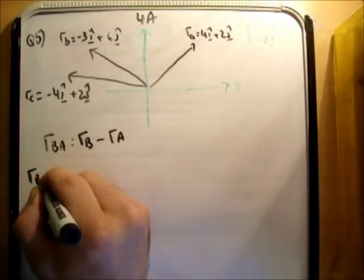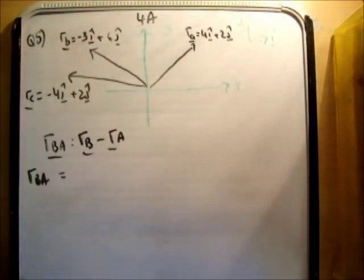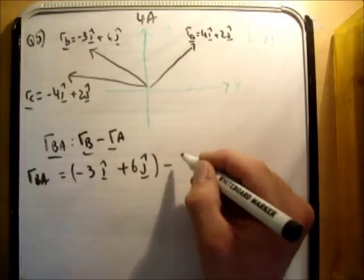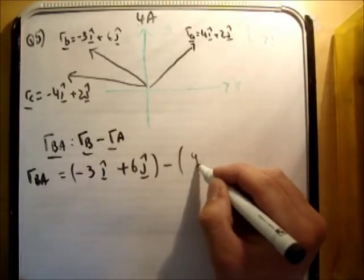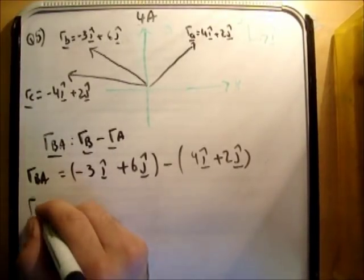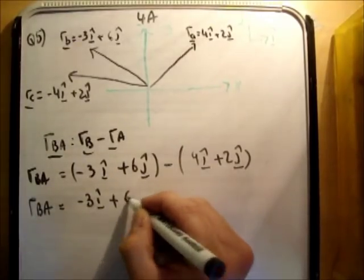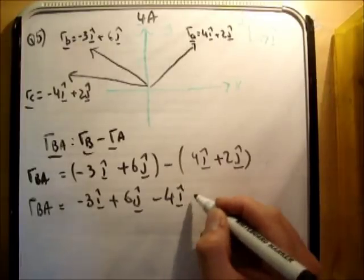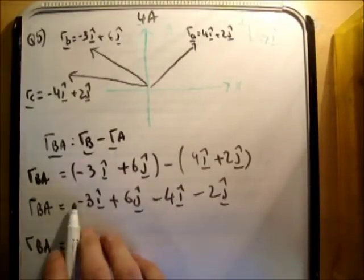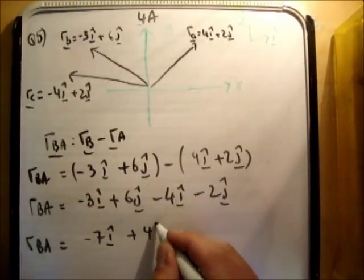So R B A. These are vectors, excuse me. These are vectors. That's R B, which is equal to negative 3i hat plus 6j hat, minus R A, which is 4i hat, plus 2j hat, like so. So R B A is equal to negative 3i hat plus 6j hat minus 4i hat minus 2j hat. So R B A is equal to, and we can add all the things in the i direction and all the things in the j, and we get negative 7i hat plus 4j hat, like so.